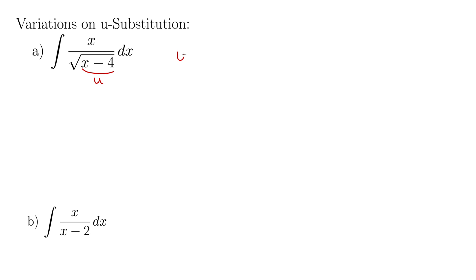Let's go ahead with our u as x minus 4. So let's let u be x minus 4, and then du is dx, taking the derivative of everything. We still have this x to think about up here, but look, we can solve this u here for x. So x is then u plus 4.